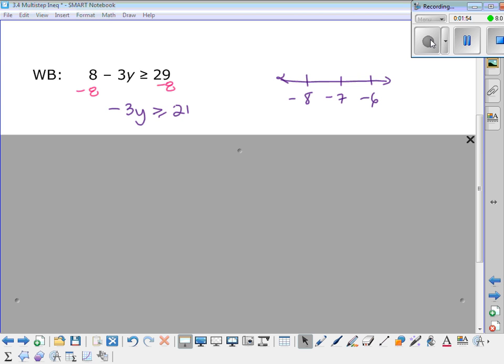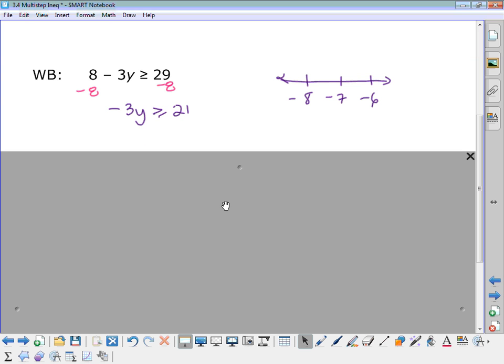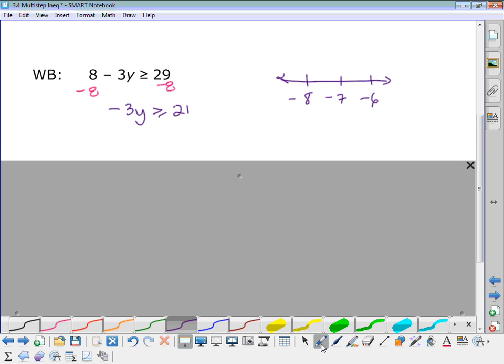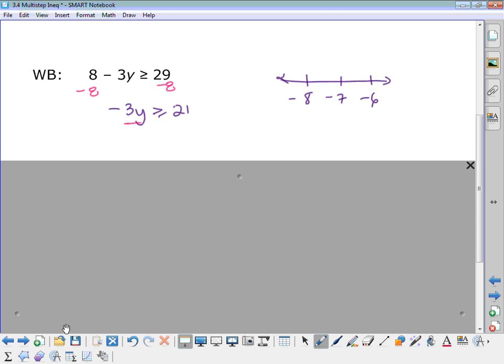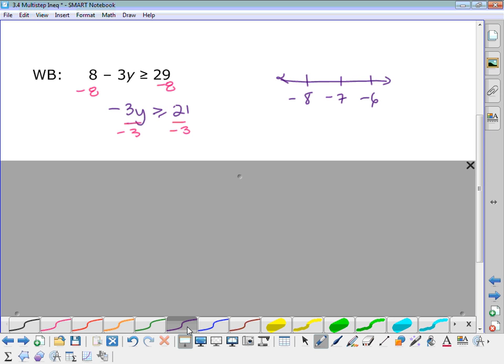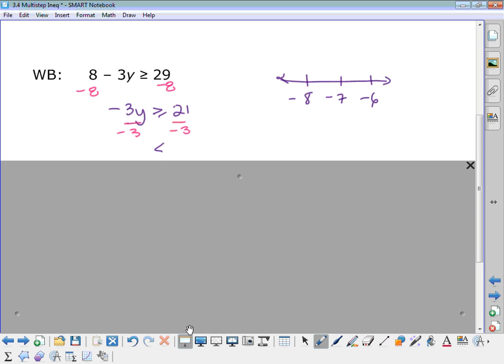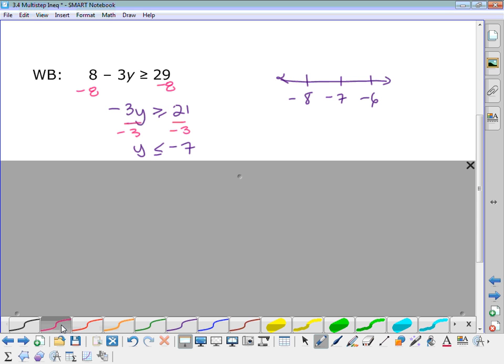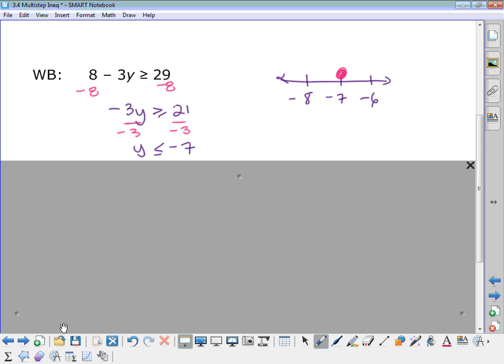So when you subtracted 8 from both sides, you've got negative 3y is greater than or equal to negative 21. And then you have to divide by a negative 3. And when you divide by a negative, what's that mean? We have to switch the symbol around. And so some of you forgot that step. And so this one would be a closed circle going to the left.